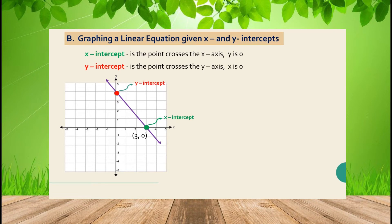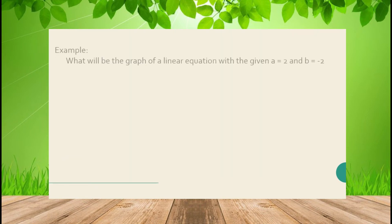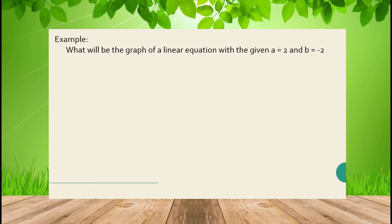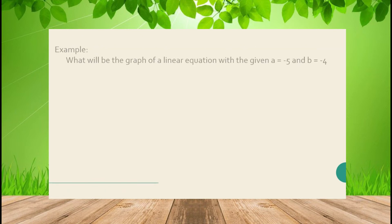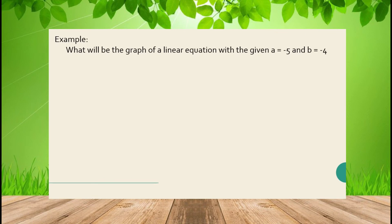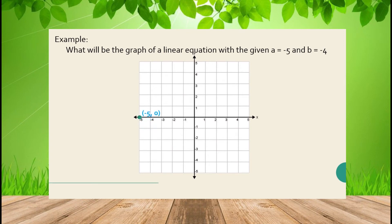For example, if the line crosses the x-axis at 3, the x-intercept is 3, and if it crosses the y-axis at 4, the y-intercept is 4. In another example, the x-intercept is -3 and the y-intercept is -4. For a linear equation where the x-intercept is 2 and the y-intercept is -2, just plot those two points and connect them to form the line. Similarly, if x-intercept is -5 and y-intercept is -4, connect those two points to get the line.